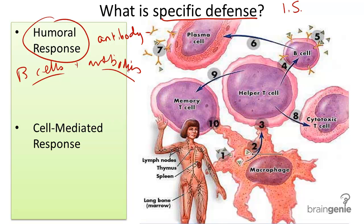When an antigen, such as a virus or a fungus, enters the body, it triggers the production of antibodies. Antibodies are these Y-shaped proteins that react with the antigen.